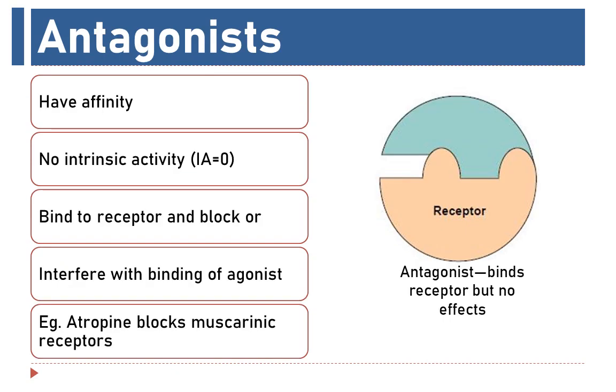Antagonists have only affinity but no intrinsic activity. These drugs bind to the receptor but do not mimic, rather block or interfere with the binding of an endogenous agonist. For example, atropine blocks the muscarinic receptors of acetylcholine. From this, we can say that antagonists can only bind with the receptor and block one of the active sites of the receptor so that the endogenous molecule cannot bind with the receptor and elicit a response.